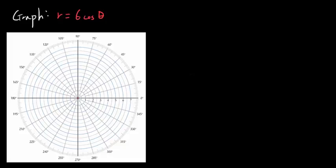In this video, we are going to attempt to graph the polar equation r equals 6 times cosine of theta by plotting points. The easiest way of doing it is plugging theta values into the function to get outputs, which are r values, and we're going to plot the points (r, theta). I'll show you how.